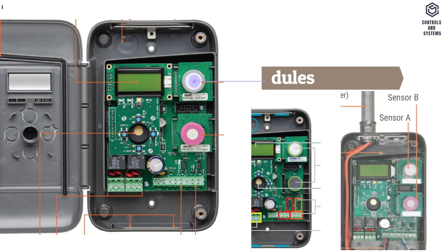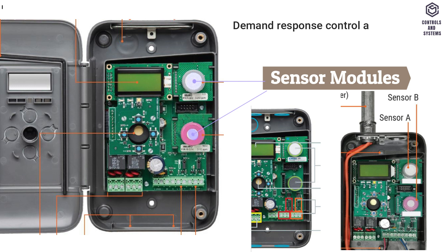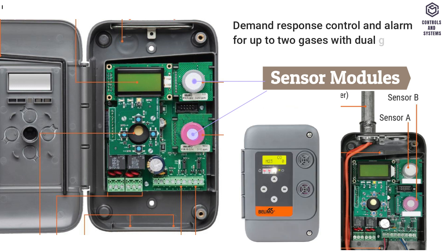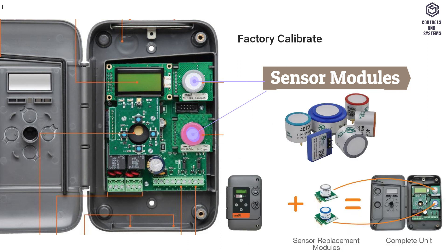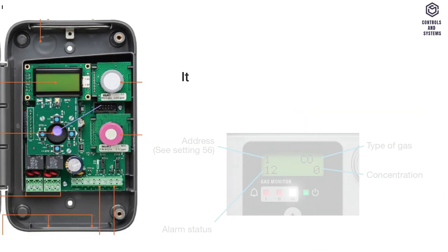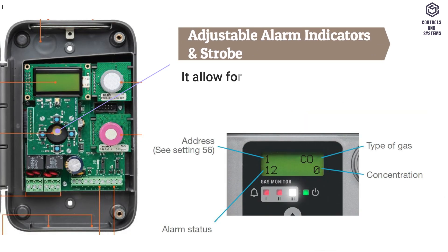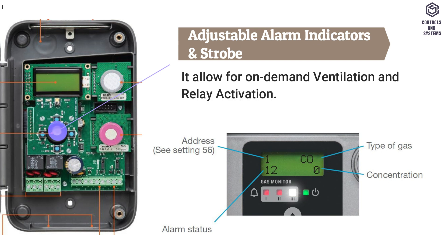This is dual gas sensor modules. Demand response control and alarm for up to two gases with dual gas module support in one monitor. Factory calibrated interchangeable sensor modules. This is adjustable alarm indicators and strobes. They allow for on-demand ventilation and relay activation.